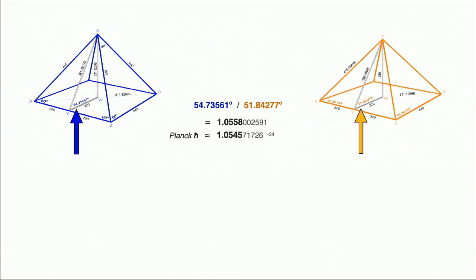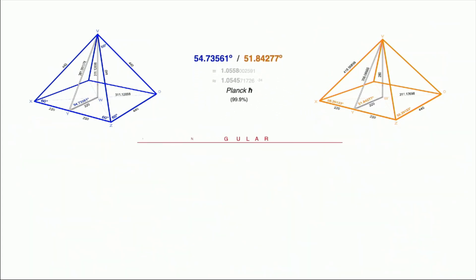It turns out that it's very accurately, very close to what's called the reduced Planck constant. Planck constant is supposedly the tiniest possible quantum of measurement that there is, way sub-sub-subatomic level. It's there to 99.9% accuracy in the comparison of these side slopes.